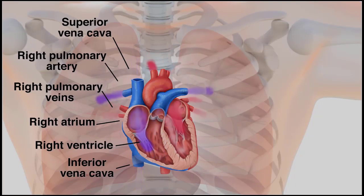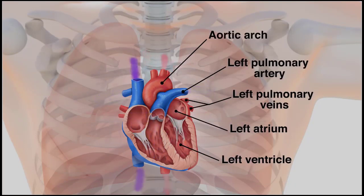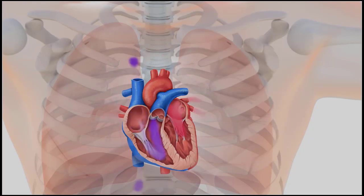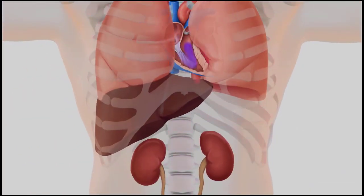If the venous pressure and the abdominal jugular reflux test results are normal, the dyspnea or edema probably is not caused by heart disease, but by some other condition, such as pulmonary, liver, or kidney disease.